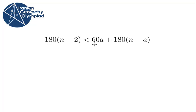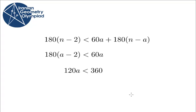So the sum of all angles is at most 60a plus 180(n - a). This gives us the inequality 180(n - 2) < 60a + 180(n - a), which simplifies to 180(a - 2) < 60a, and thus 120a < 360, implying that a is at most 2.